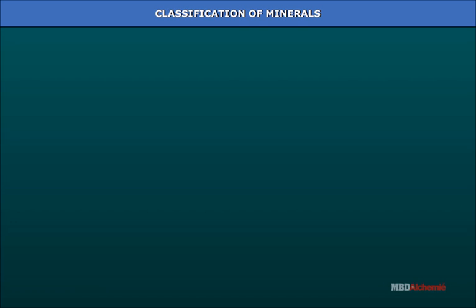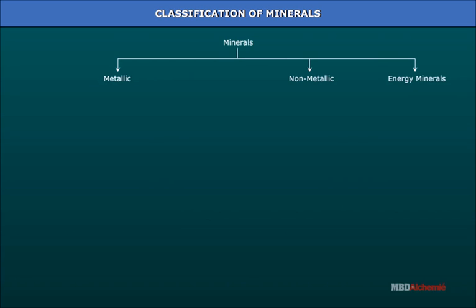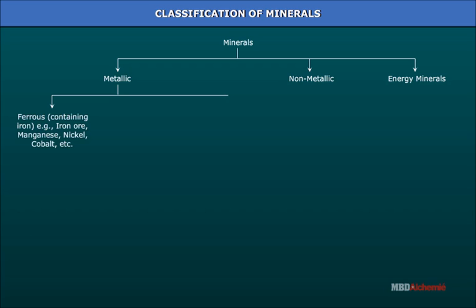Classification of minerals. Minerals are broadly classified as metallic and non-metallic. Ferrous minerals contain iron; examples include iron ore, manganese, nickel, and cobalt. Non-ferrous metals include copper, lead, tin, and bauxite. Precious minerals include gold, silver, and platinum.